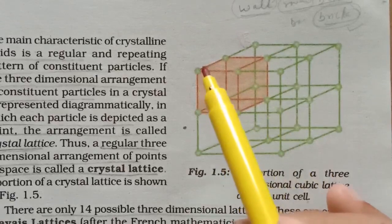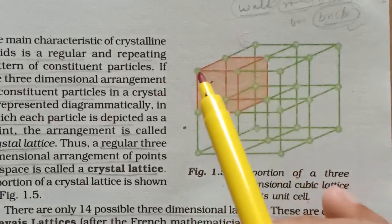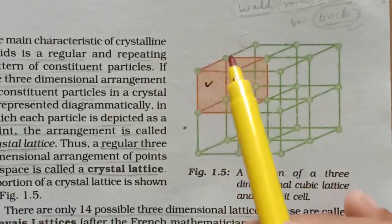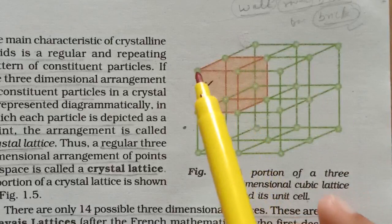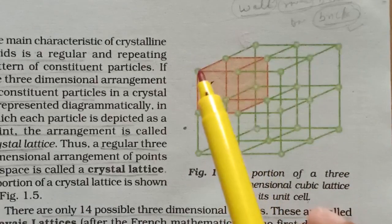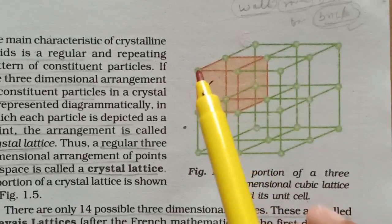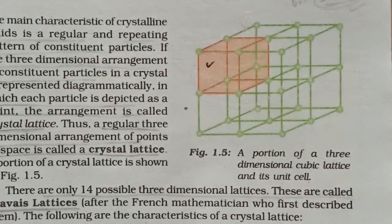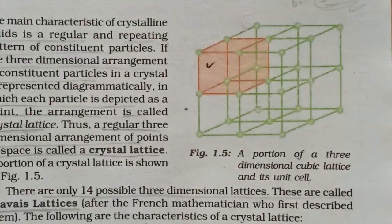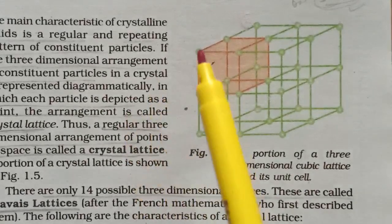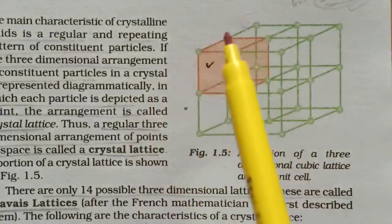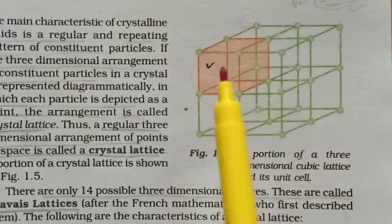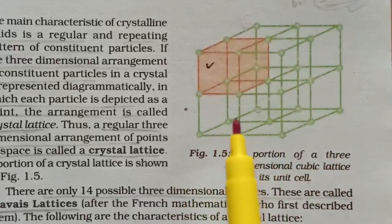These spheres represent lattice points, and in this crystal lattice these points represent one constituent particle — it can be an atom, molecule, or an ion. The third characteristic is that lattice points are joined by straight lines to bring out the geometry of the lattice. If we join these lattice points by straight lines, we get the entire geometry of the crystal lattice.